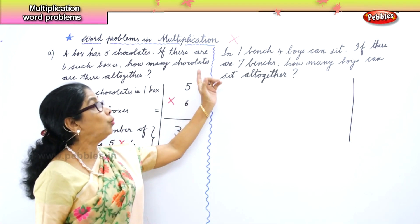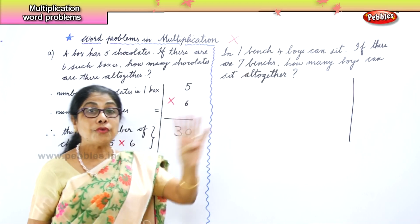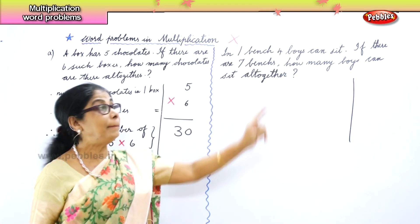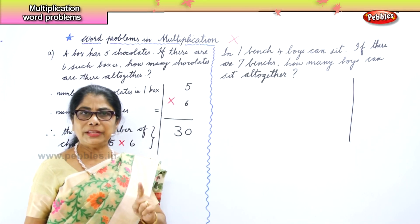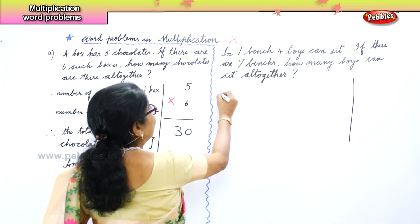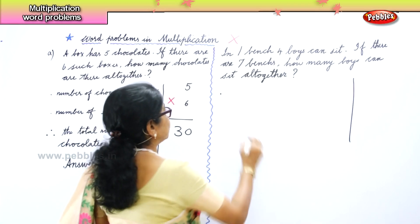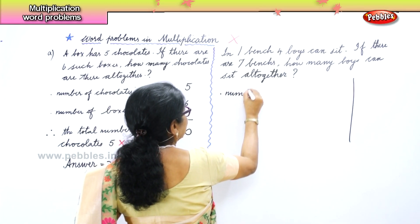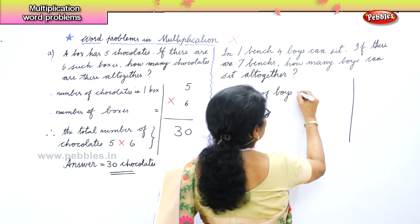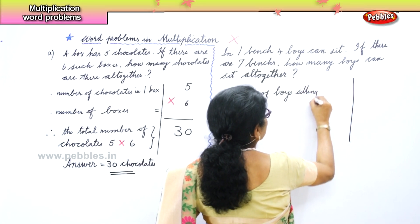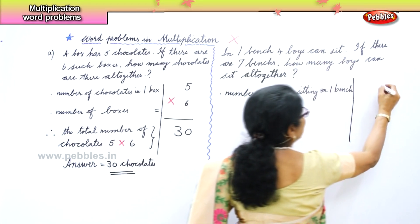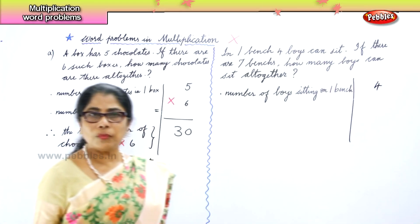Now the second sum: if in one bench four boys can sit, and if there are seven benches, how many boys can sit altogether? One bench — four boys. How many benches? Seven. First statement: number of boys sitting on one bench — four.